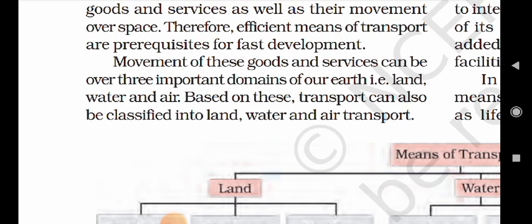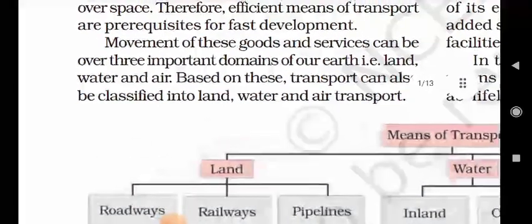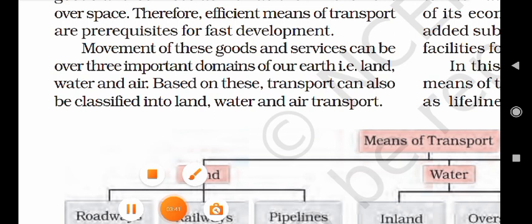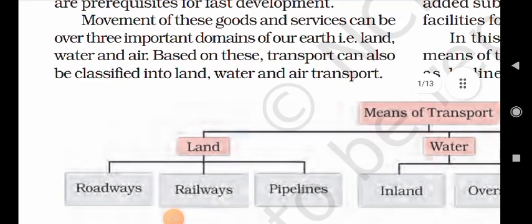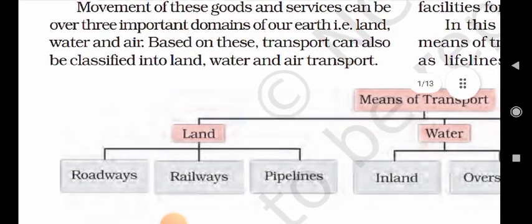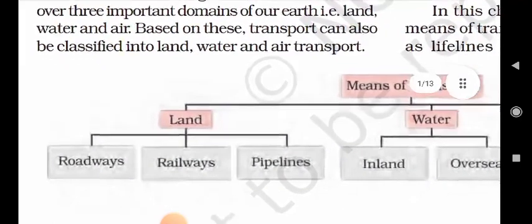Therefore, efficient means of transport are prerequisites for fast development. Movement of these goods and services can be over three important domains of our earth — that is land, water, and air.